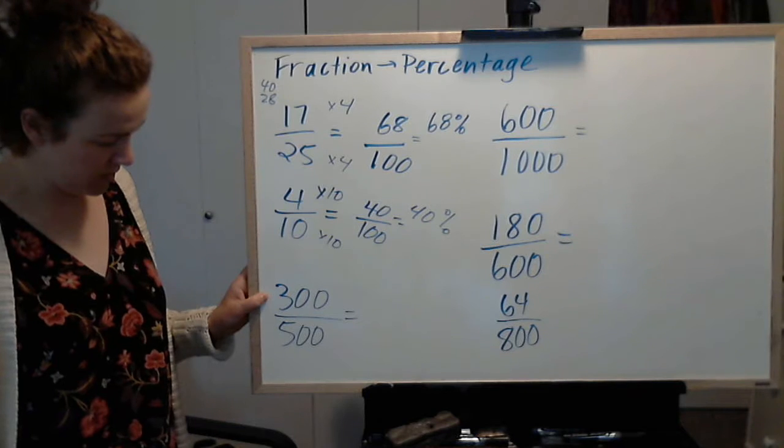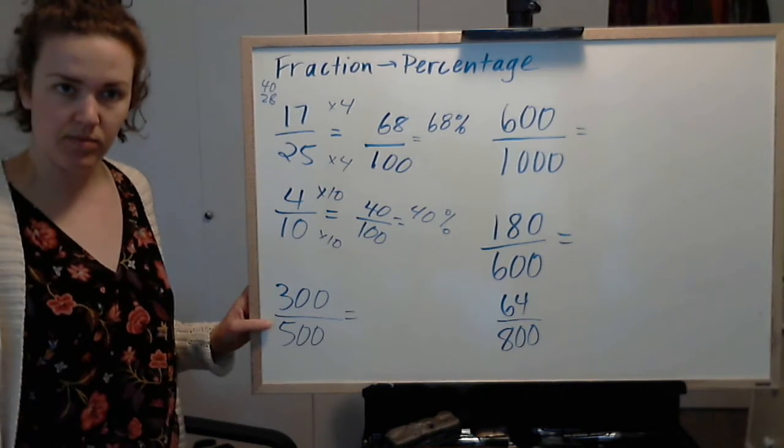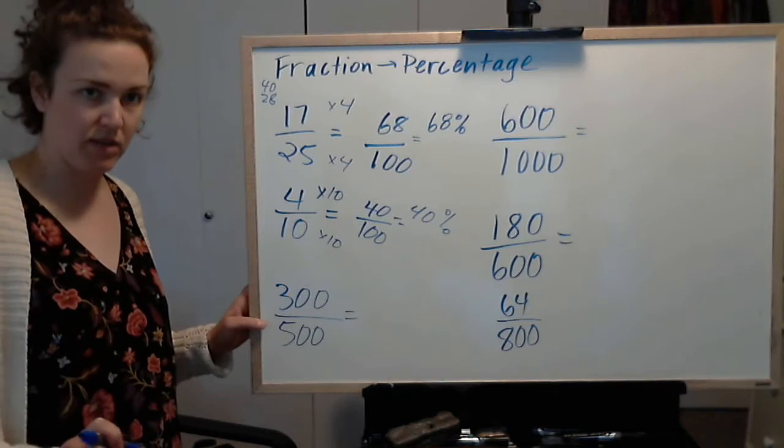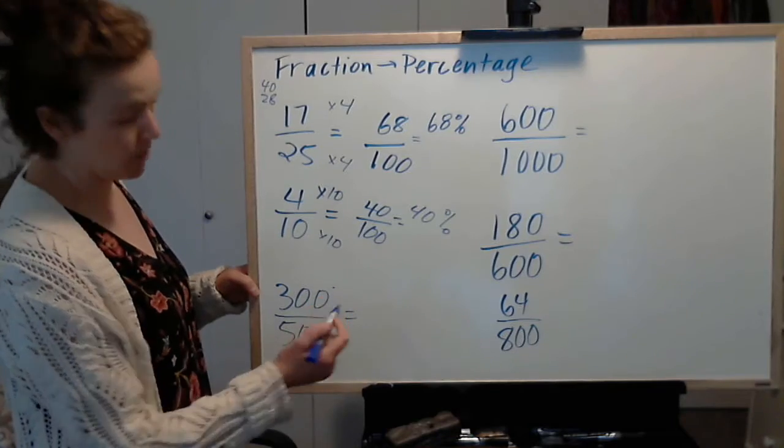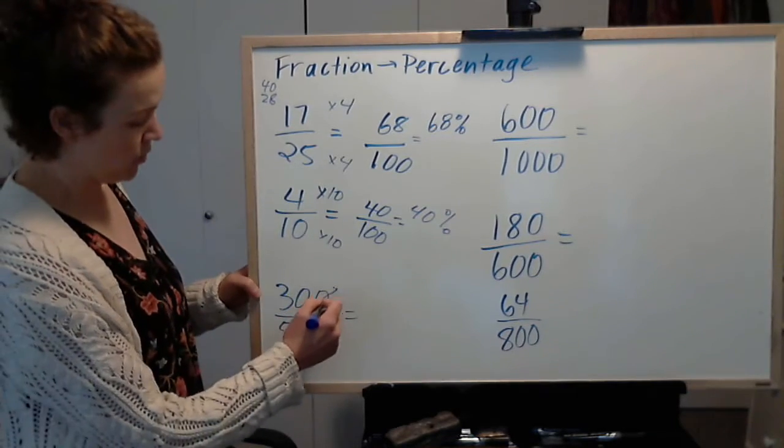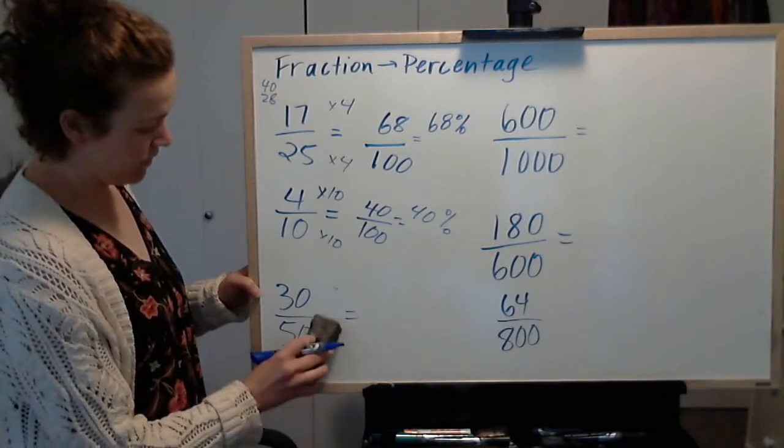For this one, I am going to simplify the fraction in a way that's easier for me to work with. So I am just going to divide top and bottom by 10, which means I can remove a 0. So now I've got 30 out of 50.